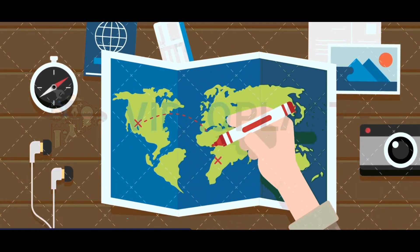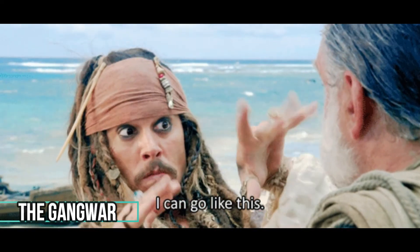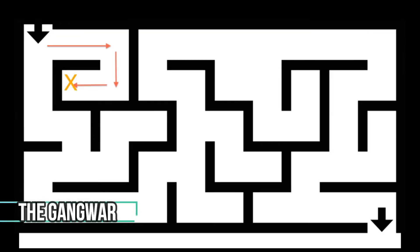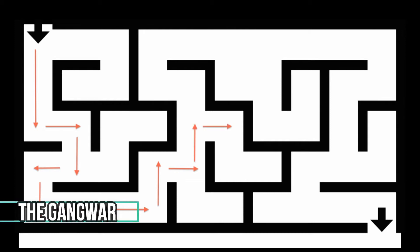Breadcrumbs are very useful for users — they encourage people to visit more pages and are an important part of almost every website. These little navigational aids don't just tell people where they are on your website, but they also help Google or any search engine work out how your site is structured and how pages are linked to one another. They are simple text path pointers.